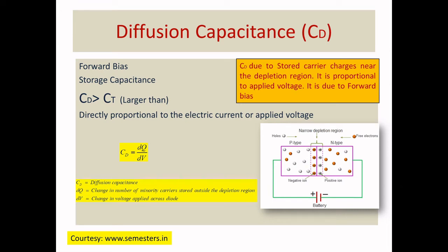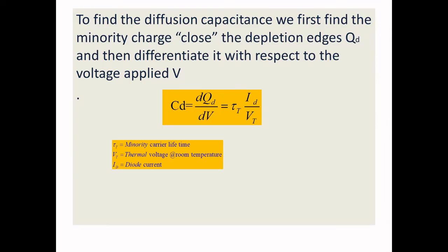When you speak about diffusion capacitance, the width of the depletion region will be very, very small. The change of charge with respect to the applied voltage — since the depletion width is very narrow, capacitance is inversely proportional. When the width is low, the capacitance value will be very large. Diffusion capacitance C_D will be larger than the transition capacitance C_T because of the width of the depletion region. The equation is C_D = tau_T × I_D divided by V_T, where tau_T is the minority carrier lifetime, I_D is the diode current, and V_T is the thermal voltage (26 mV).